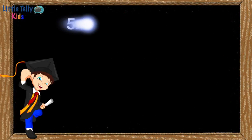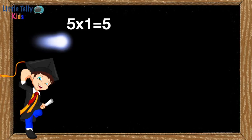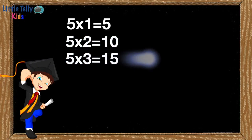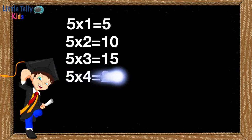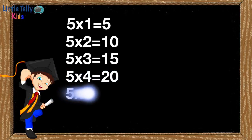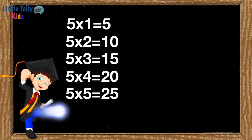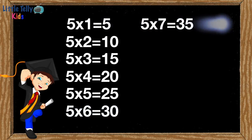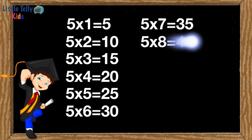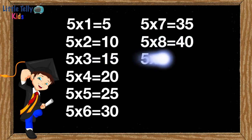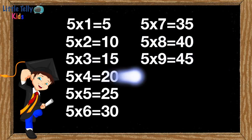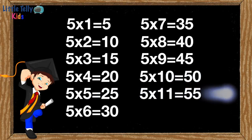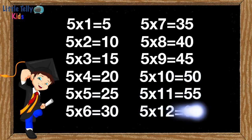5 ones are 5, 5 twos are 10, 5 threes are 15, 5 fours are 20, 5 fives are 25, 5 sixes are 30, 5 sevens are 35, 5 eights are 40, 5 nines are 45, 5 tens are 50, 5 elevens are 55, 5 twelves are 60.